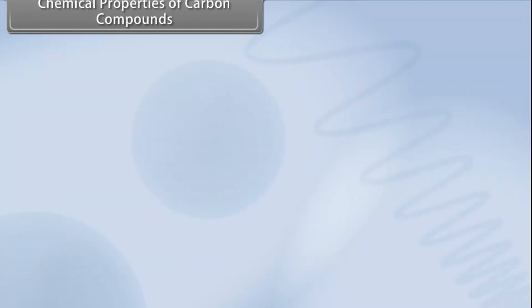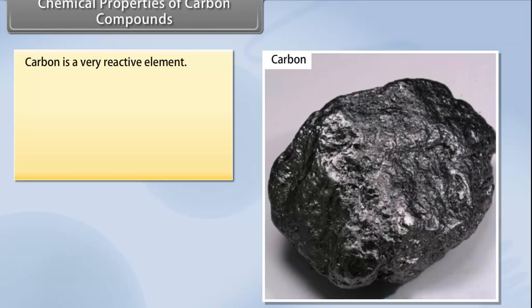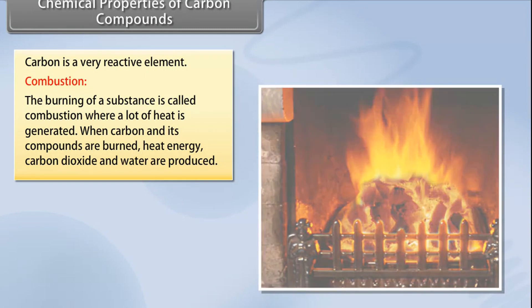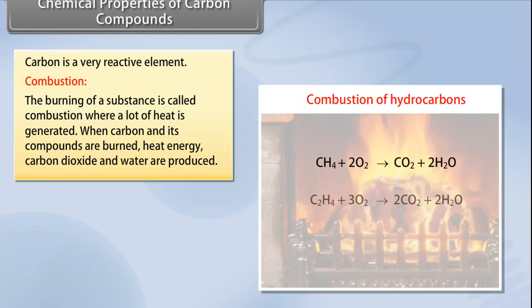Chemical properties of carbon compounds. Carbon is a very reactive element. Main chemical properties are listed. Combustion: The burning of a substance is called combustion. It is a process that generates a lot of heat. When carbon and its compounds are burnt, heat energy, carbon dioxide, and water are produced.